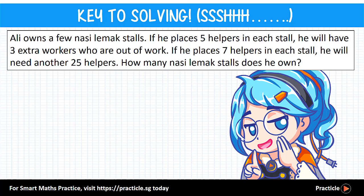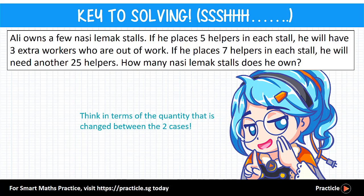Now that we are clear about the question, how do we solve it? Here's the secret: the key to solving such questions is to think in terms of the quantity that is different between the two scenarios. In each scenario, the number of helpers Ali places in his store is different, so the thing we need to think about is the number of helpers that Ali has. Let's see how thinking about this helps us solve the question.